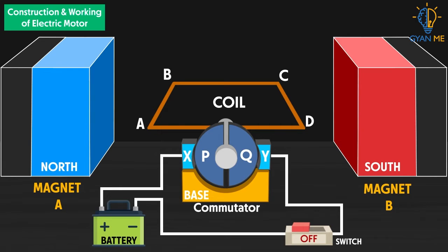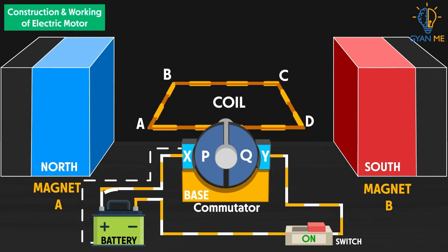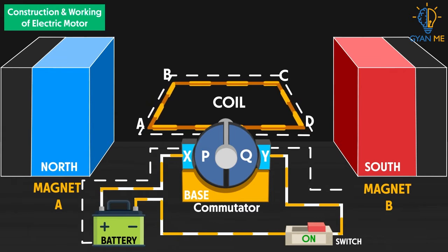Now let us see the working of the electric motor. The two arms AB and CD are perpendicular to the direction of magnetic field. When a current is passed through the coil ABCD, current enters from the source battery through conducting brush X and half ring P, and flows back to the battery through half ring Q and brush Y. The current flows from A to B in arm AB and then from C to D in arm CD. That is, the current flows in the opposite direction in the two arms.